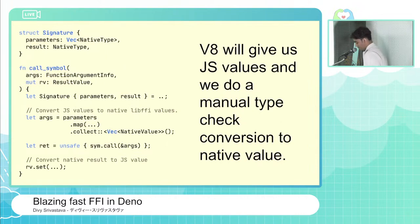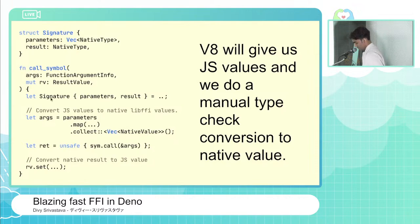So how would you represent this in Rust? Deno is written in Rust, and something like FFI could be implemented using this snippet. We have a struct for the signature, a struct for parameters and result, and a function called call_symbol. The first argument we get from V8, and the second one we set ourselves. We get the parameters and result, convert JS values to native values, call the actual function, convert the native result back to a JS result, and give it back to V8. That's a lot of work, but that's what a basic implementation looks like.